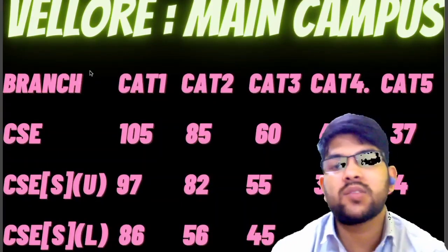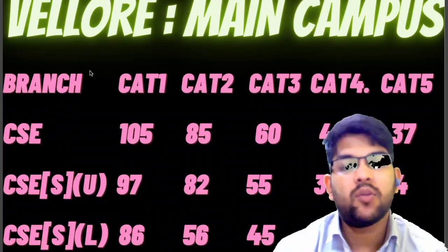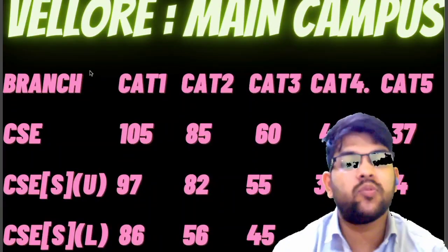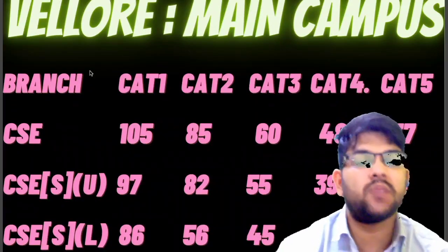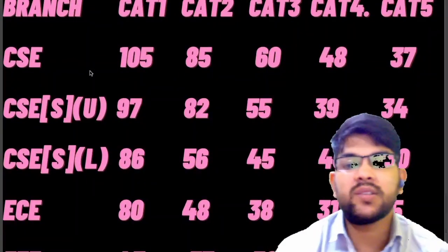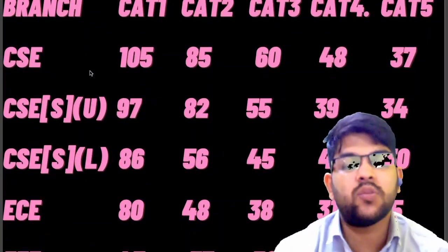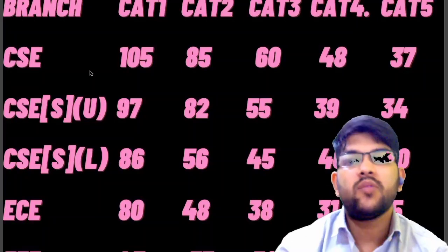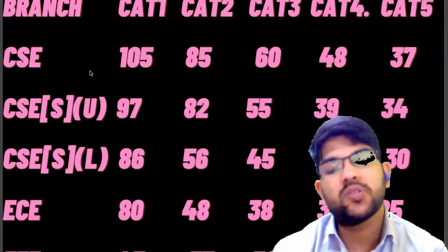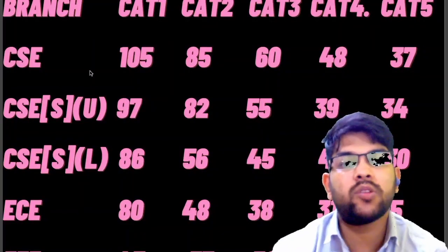For VIT Vellore, CSE specialization lower specialization: 86 marks for Category 1, 56 for Category 2, 45 for Category 3, 40 for Category 4, and 30 for Category 5. For EC: 80 marks for Category 1, 48 for Category 2, 38 for Category 3, 31 for Category 4, and 25 for Category 5.